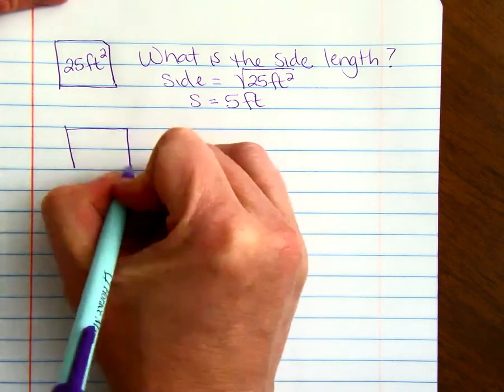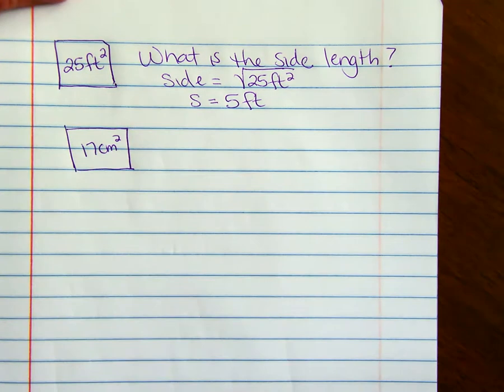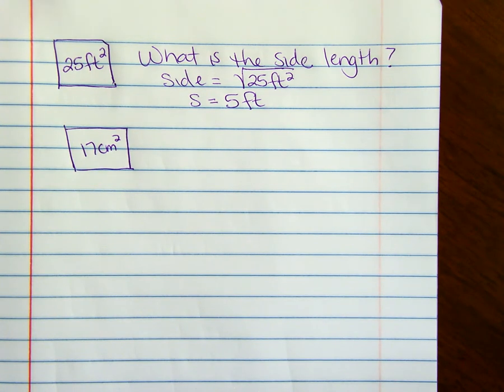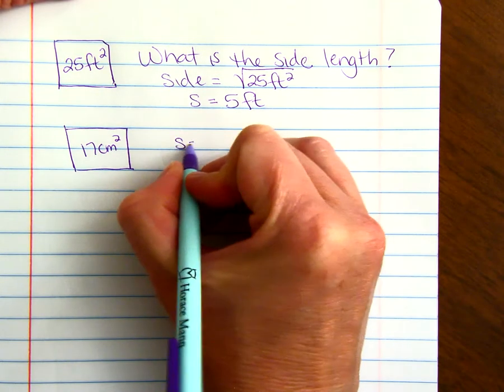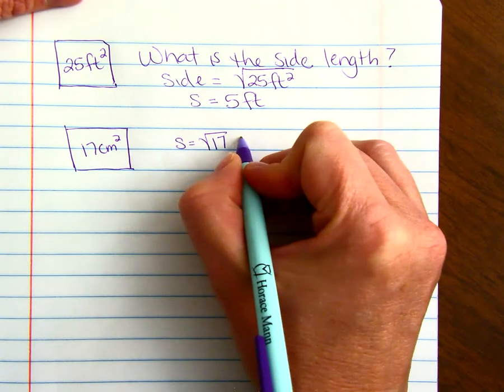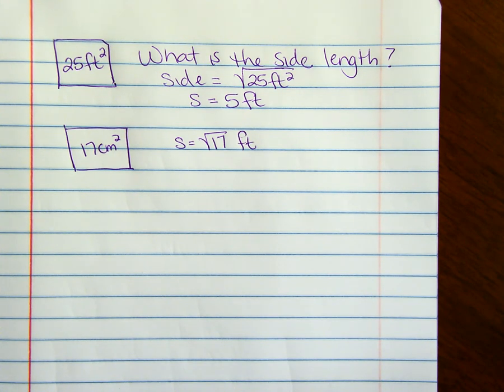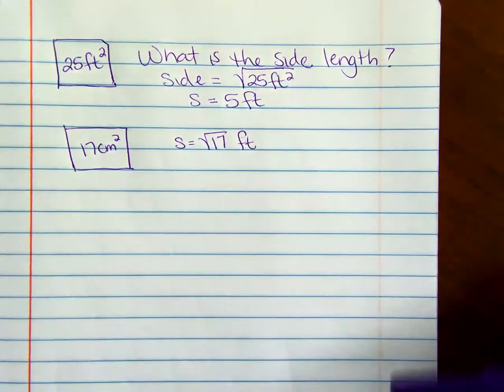If you have a square whose area was 17 centimeters squared, the side length, we have to do the same thing that we did up here, is the square root of 17 feet. And you don't want to be afraid of that number. That's just a number. That's how long the side is. Okay, that's the end of the lesson.